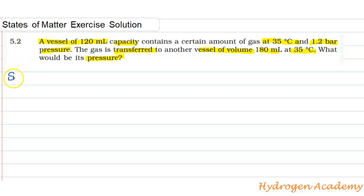In this question, the information given about vessel 1, if we write given here: this is one vessel in which a gas is kept. The gas volume is 120 mL and the pressure is 1.2 bar, temperature is 35 degrees Celsius.